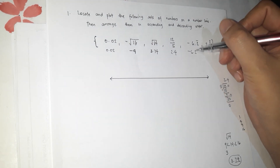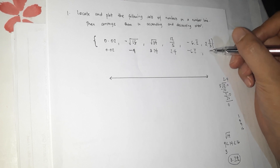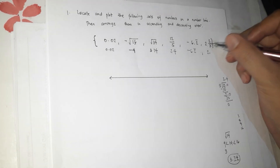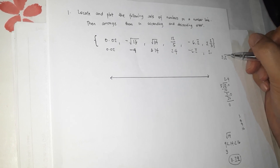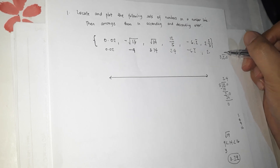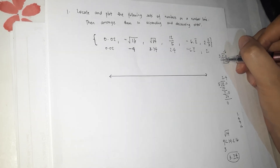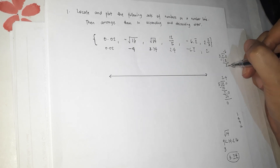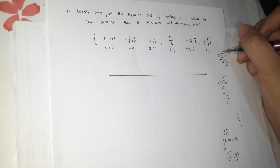Negative 6.2 bar stays as is. Then 2 and 2 thirds: we compute 2 divided by 3 — add a zero, 20 divided by 3 is 6 (6×3=18), remainder 2, and this repeats. So 2/3 = 0.6 bar, meaning 2 and 2 thirds = 2.6 bar.